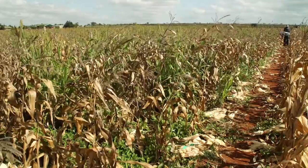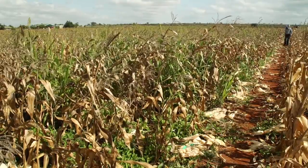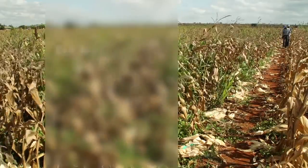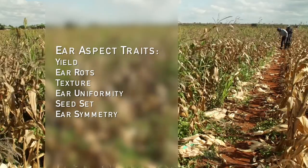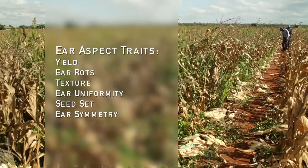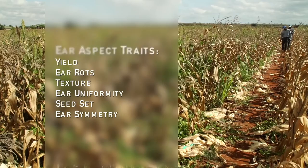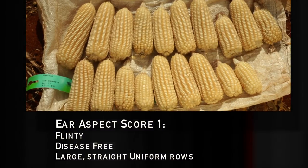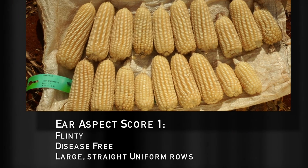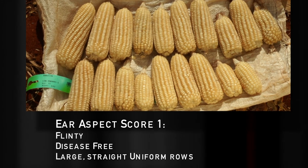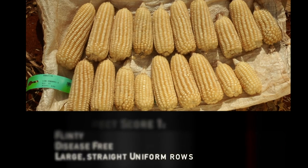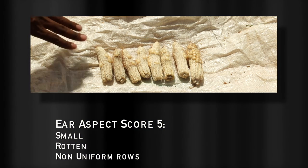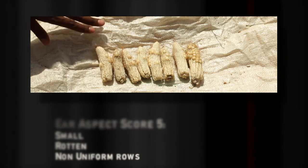Ear aspect is a composite visual score given by breeders to rate the overall harvest performance of a variety. Ear aspect incorporates key traits such as yield, ear rot, texture, ear uniformity, seed set, and ear symmetry. Ear aspect is scored on a 1 to 5 scale, where 1 represents an excellent ear type with plenty of disease-free, large, straight, and uniform rows, and 5 represents a very bad ear type that is small, rotten, and non-uniform.